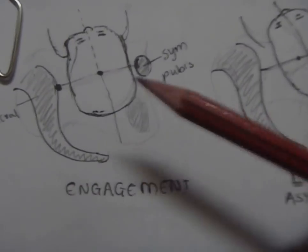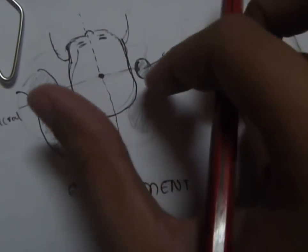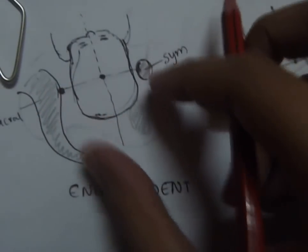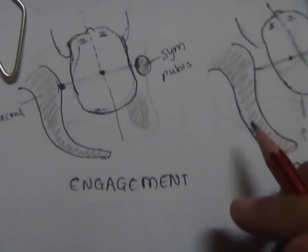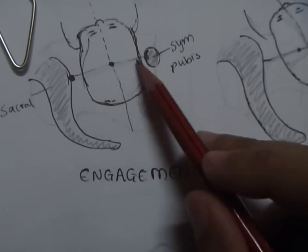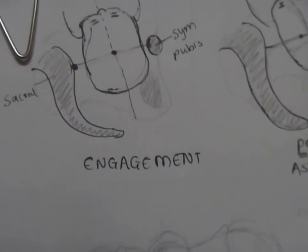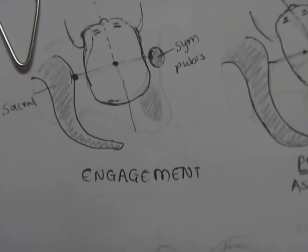We say that engagement has taken place when the widest diameter of the presenting part has passed through the inlet. Now in cephalic presentation the biparietal diameter is the widest diameter, while in breech presentation it is the intertrochanteric diameter.